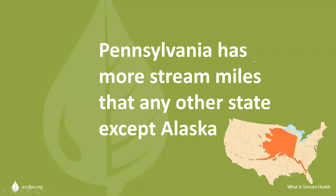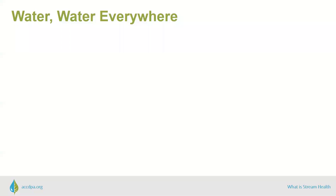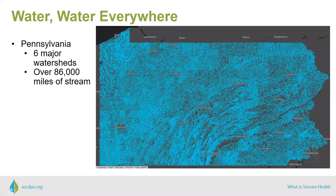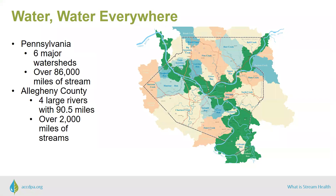In Pennsylvania, we're fortunate to have a lot of water resources. In fact, Pennsylvania has more miles of rivers and streams than any other state except Alaska, which is 14 times bigger in land area than Pennsylvania. Pennsylvania has six major drainage basins across the state with over 86,000 miles of streams. Allegheny alone has four major rivers totaling 90 miles and over 2,000 miles of stream.